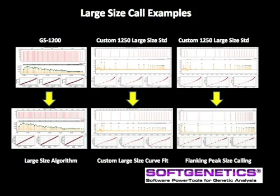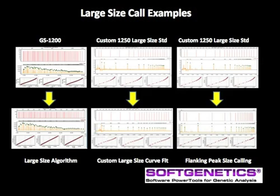We will use some examples to illustrate the benefits of selecting a size calling algorithm that is best suited for different large size standards. The upper figures are large size internal lane standards that were analyzed using the Local Southern method, each having data that deviates from the linear range. The lower figures are the same size standards but analyzed with unique GeneMarker size calling algorithms, showing improved linear range. At the left, the large size algorithm provides linear range for all of the fragments in GeneScan 1200. The custom large size curve fit method in the center provides an improvement in linear range for a custom large size standard that has most fragments concentrated in the upper size range. The flanking peak size calling at the far right provides linear range for this custom size standard.